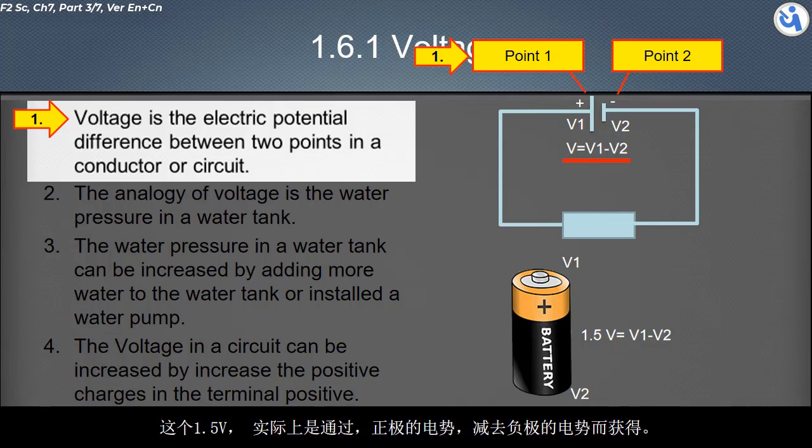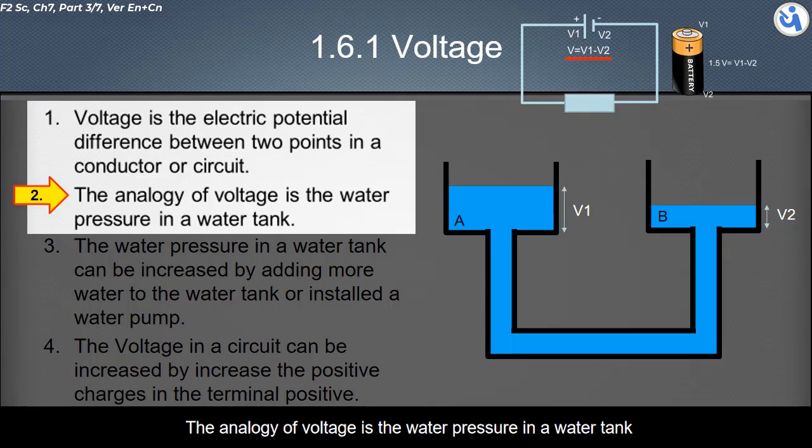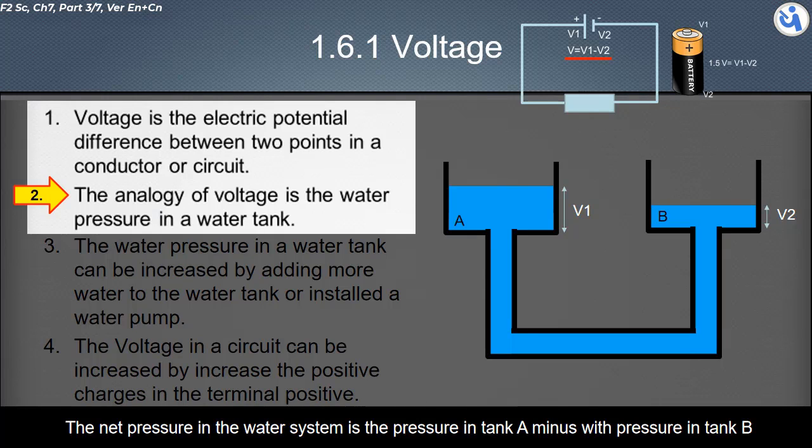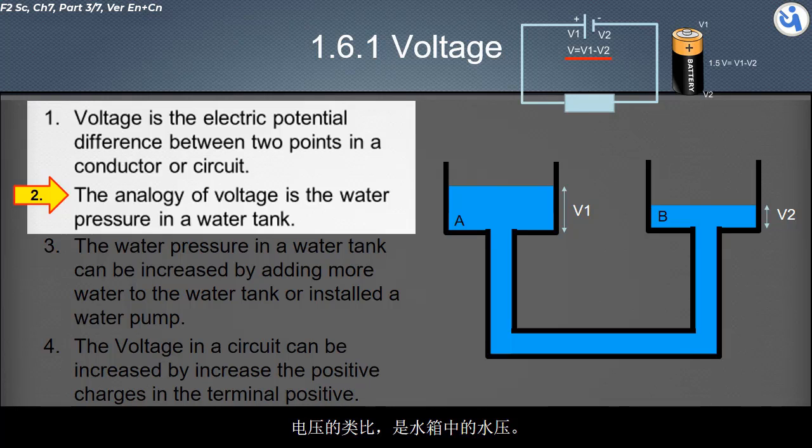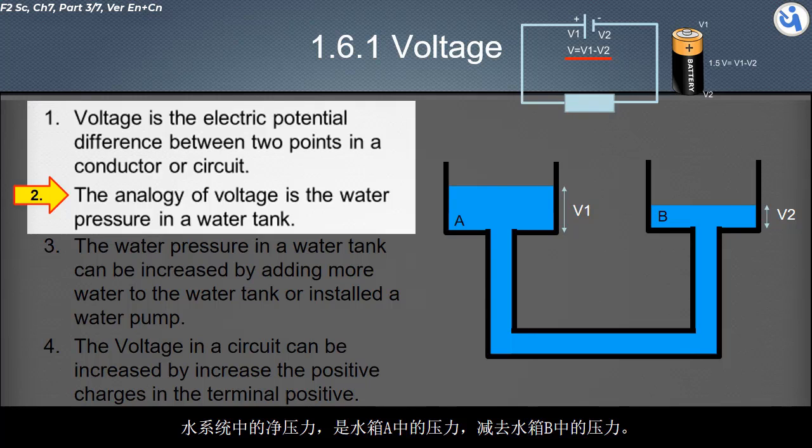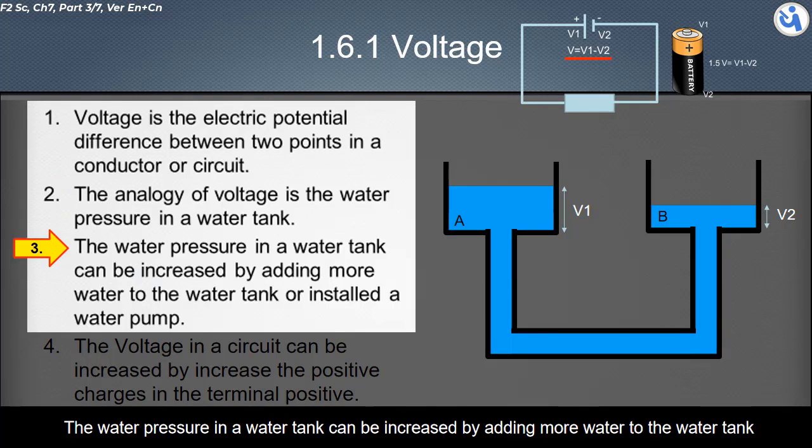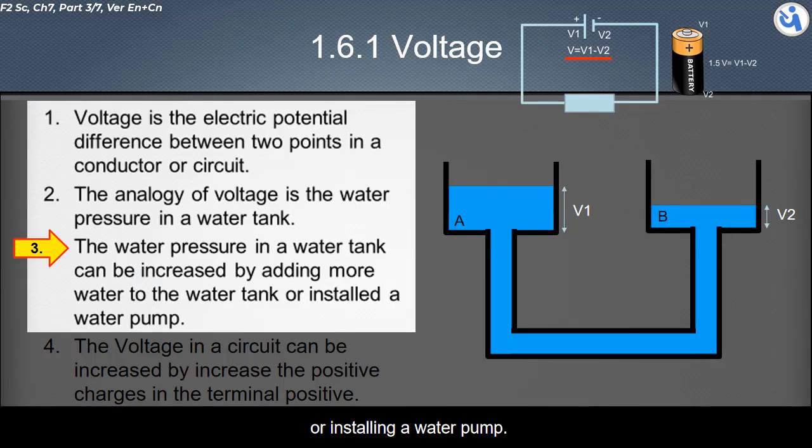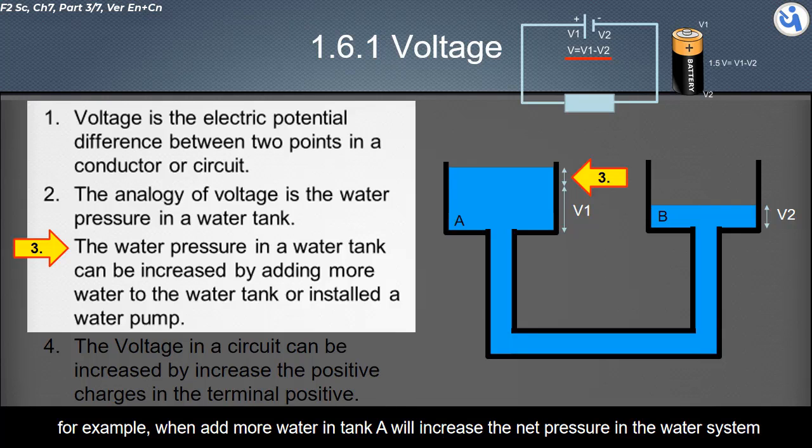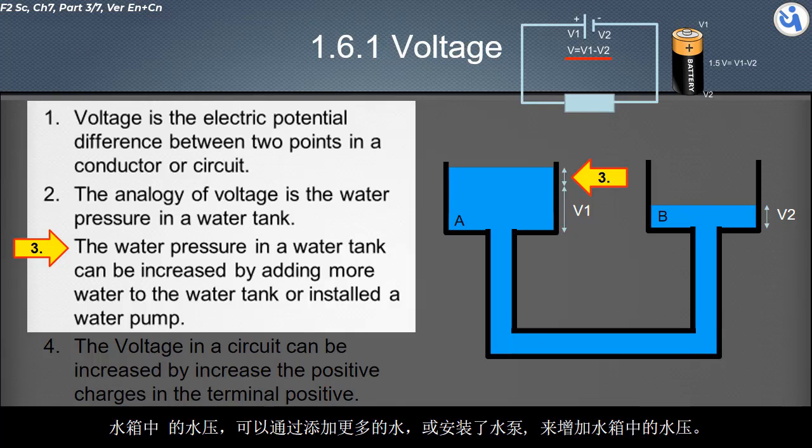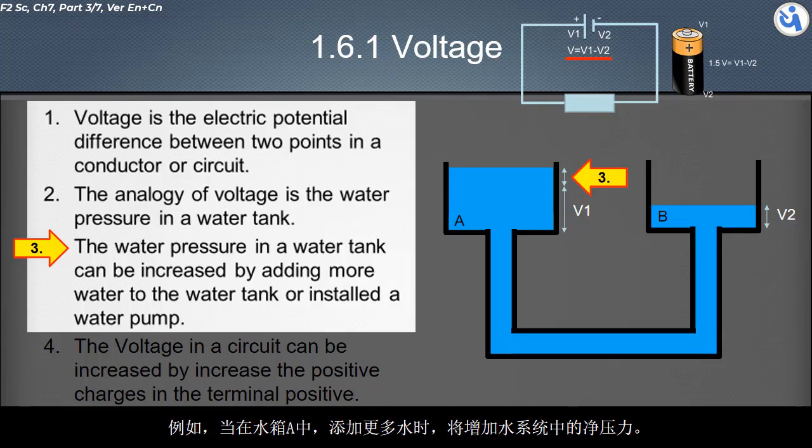The analogy of voltage is the water pressure in a water tank. The net pressure in the water system is the pressure in tank A minus the pressure in tank B. The water pressure in a water tank can be increased by adding more water to the water tank or installing a water pump.